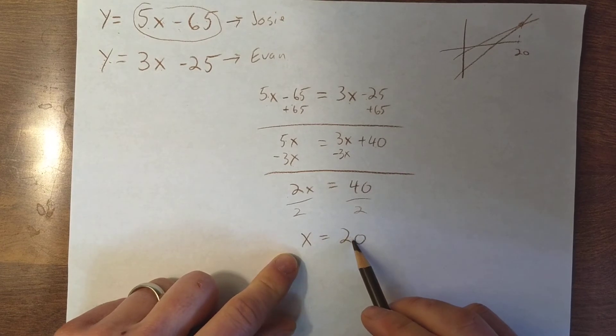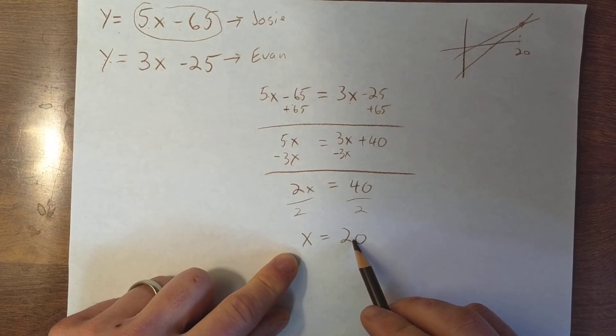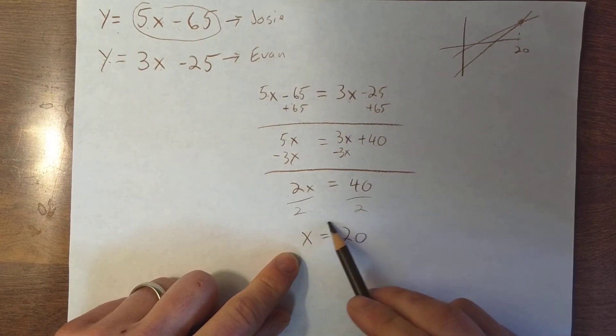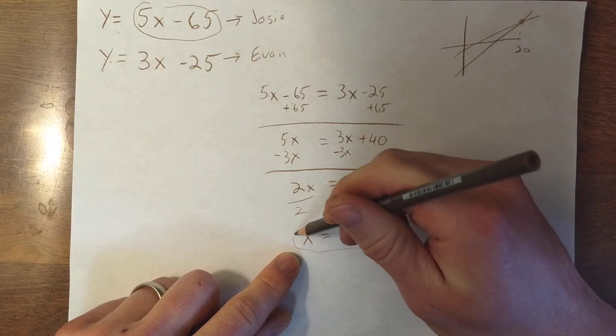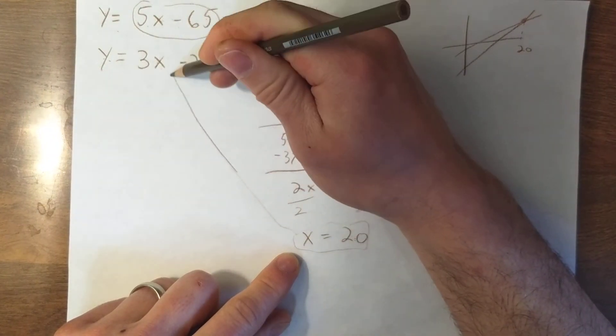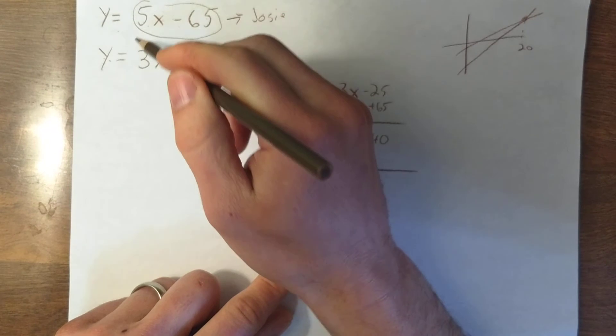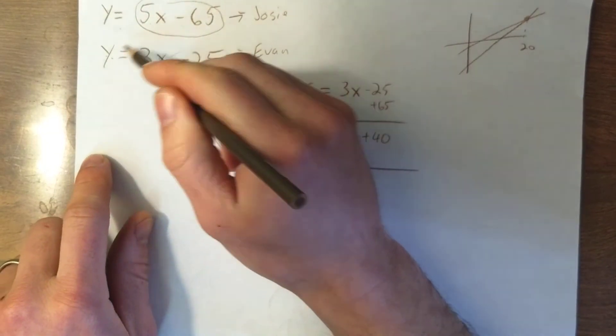That's only my x value at the point of intersection. To find the y value, I take this x equals 20 and sub it in for x in either one of these two equations. I'm going to choose the smaller numbers, the Evan equation.